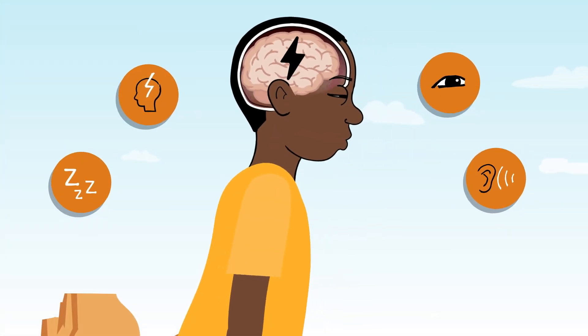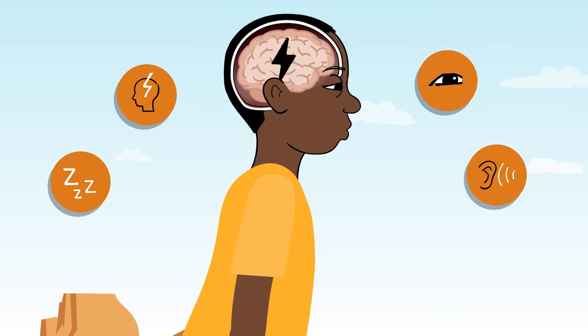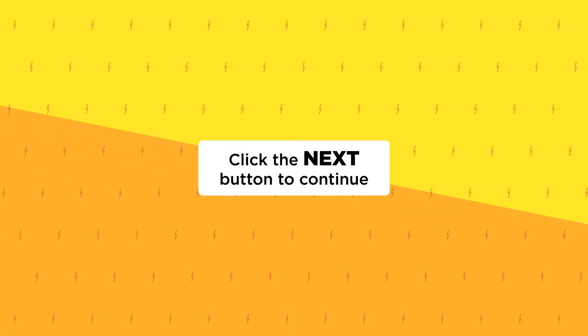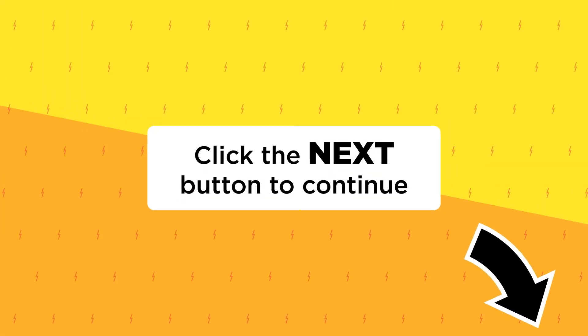These changes in the brain can show up as the signs and symptoms we associate with a concussion. Several icons appear around the boy's head: a head with a lightning bolt, three Zs, a human eye, and an ear beside sound waves. Click the next button to continue. A black arrow points to the lower right corner.